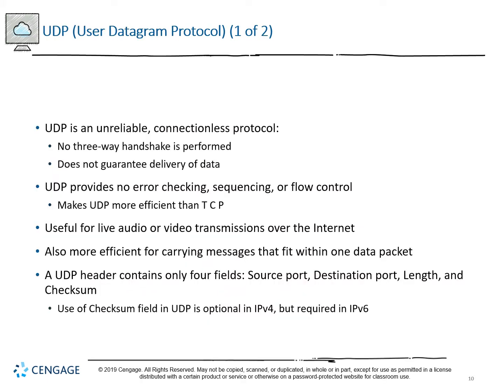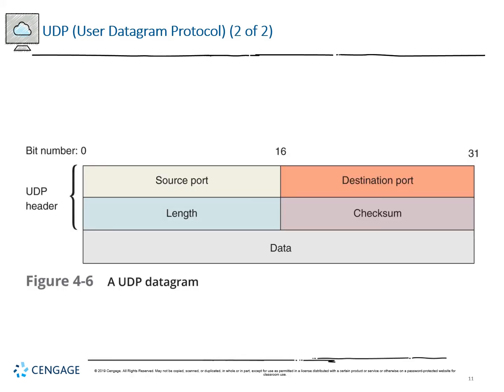UDP, in contrast to TCP, is not considered reliable — meaning we can't rely on it to guarantee delivery of data. There's no error checking, no sequencing, no flow control. But because there's less overhead, it is much faster and more efficient. It's useful for live audio or video transmissions and anything considered delay-sensitive. It's also more efficient for messages that fit within one data packet. UDP headers only contain four fields: source and destination port, length, and checksum. The checksum is optional in IPv4 but required in IPv6. Compared to the TCP header, it is much less complex and processed more quickly through intermediary devices.